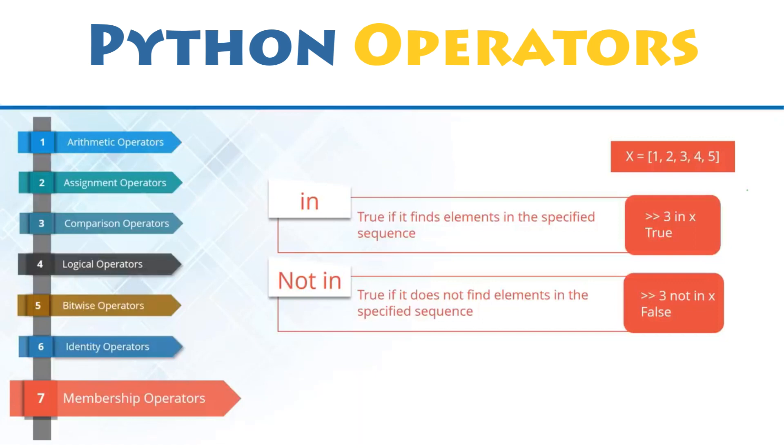On the other hand, the statement 3 not in X will return false since 3 is an element of this list.